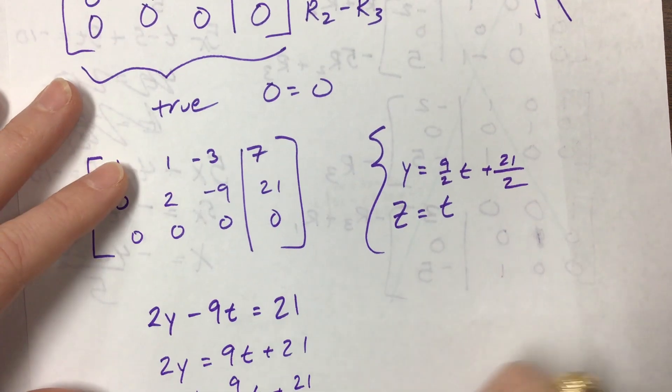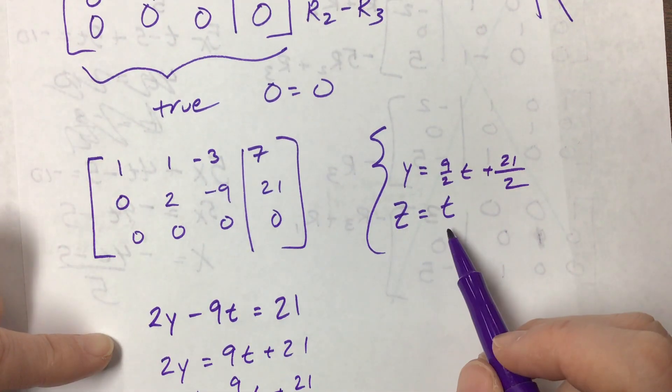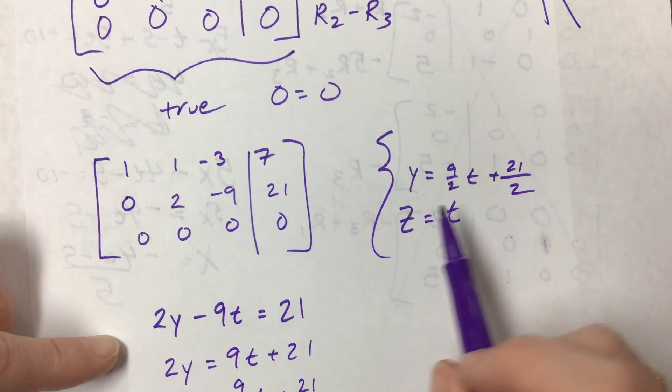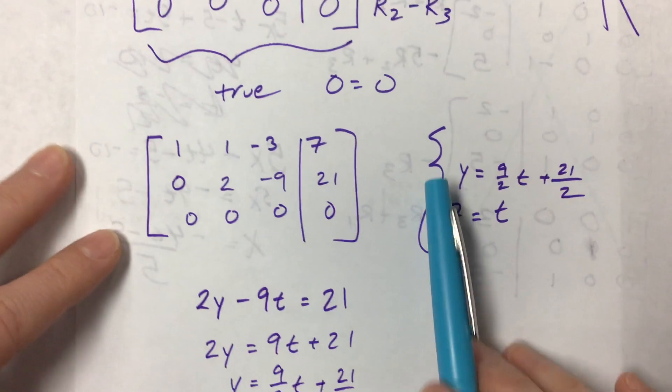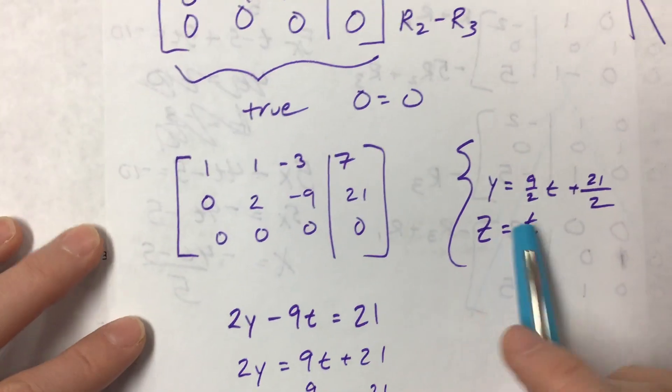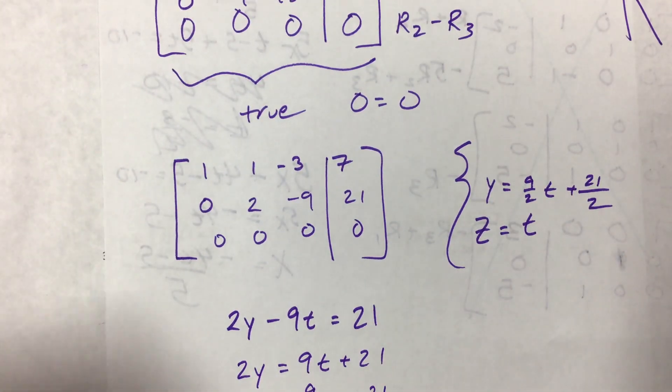Would there be any reason to make t equal to, z equal to 2t? Oh, that could be nice. Does that help? Yeah, if I multiplied this - if I came along, okay, well I don't really want to work with fractions.